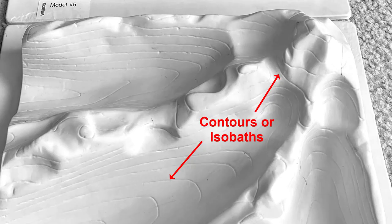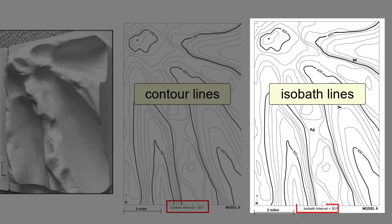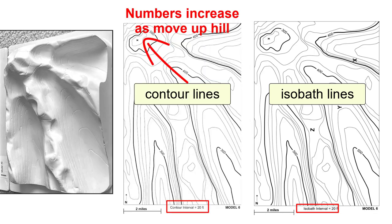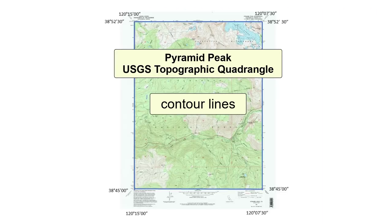Here is an exaggerated terrain model showing peaks and valleys with lines of equal elevation. The corresponding map has a contour interval of 20 feet. Here is what the same map would look like if the lines were isobaths and the terrain were underwater. For contour lines the numbers get bigger moving up the peak, but for the nautical chart the numbers get smaller because we're moving closer to sea level. Returning to the Pyramid Peak quadrangle, which is above sea level, the contour lines get bigger as we move up.